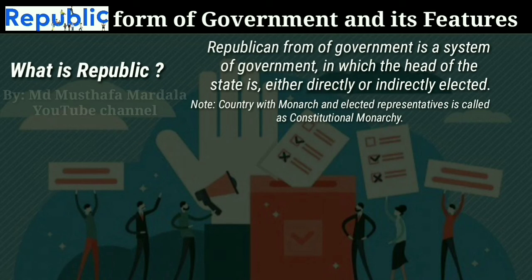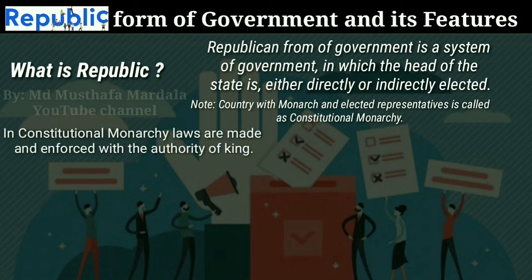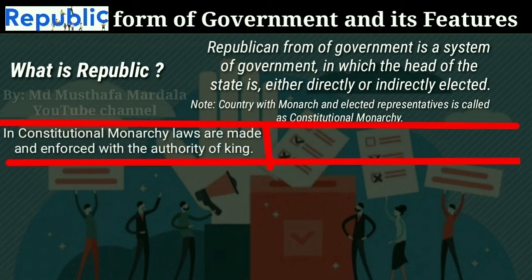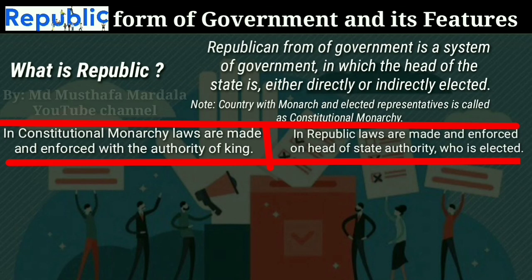What makes constitutional monarchy different from a republican form of government is that in a constitutional monarchy, laws are made and enforced with the authority of the monarchy — even if he is a de jure authority, meaning authority in theory only. But in a republican form of government, the laws are made and enforced with the authority of the head of state, who is either directly or indirectly elected.